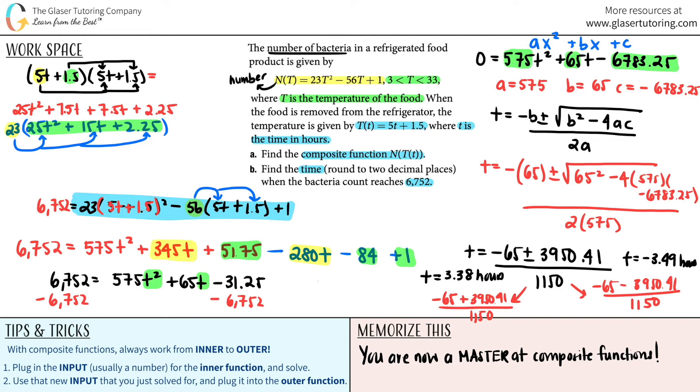The question is, which one is the right answer? They're looking for a time value. Here is a positive time, here is a negative time. Which one makes sense? Time is always positive, so this has to be the answer. Once you get a negative value for time, you can automatically get rid of that. So this would be 3.38 hours. That's the time it takes for bacteria to reach 6752 count. That's crazy, they grow so fast.